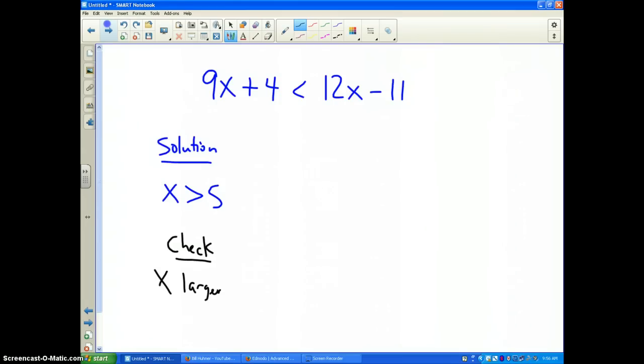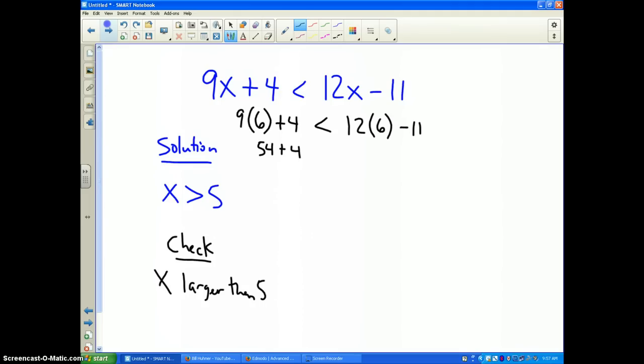Now we should check this and verify. In order to check this, we need to pick an x value that is larger than 5, so let's try the number 6. If I put a 6 where the x's are, I have 9 times 6 plus 4, and that should be less than 12 times 6 minus 11.